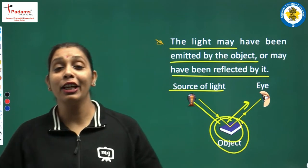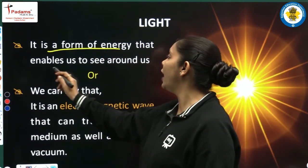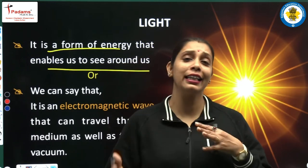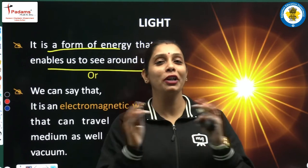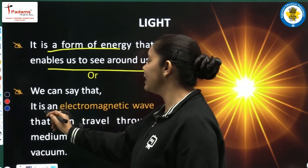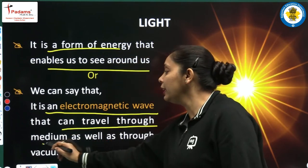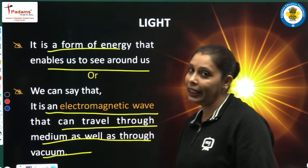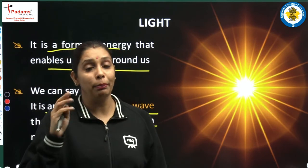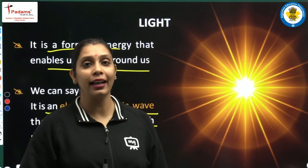So what is light? Light is a form of energy that enables us to see around us — the rainbows, mountains, birds, trees, buildings, animals, everything around us. It is possible with the help of light only. We can also say that it is an electromagnetic wave, which means it can travel through a medium as well as through vacuum. And we studied in class 7 that light travels in a straight line.